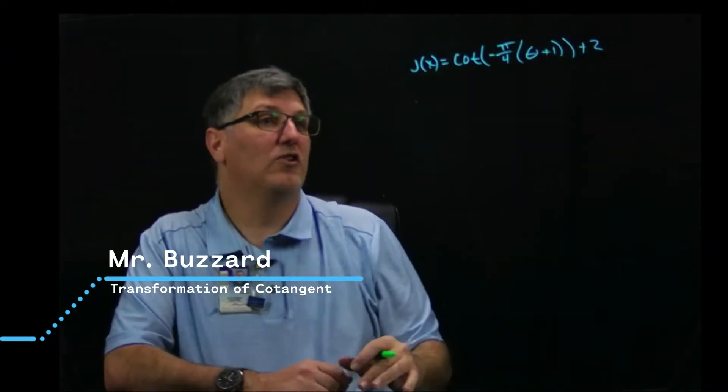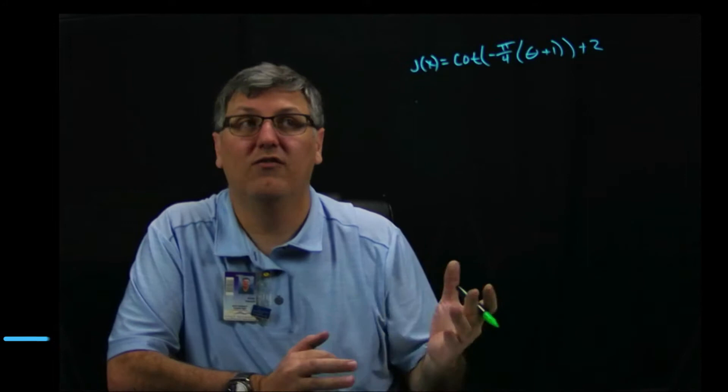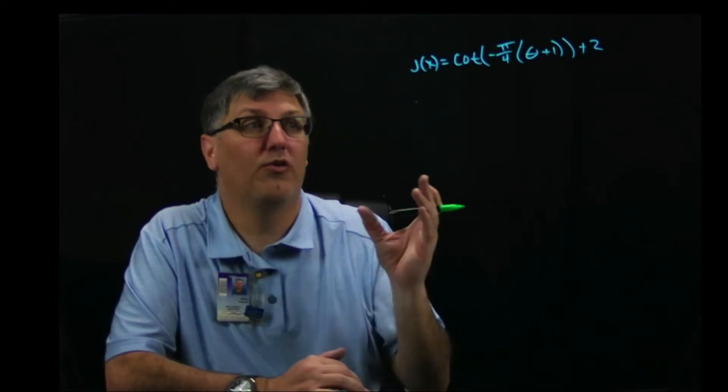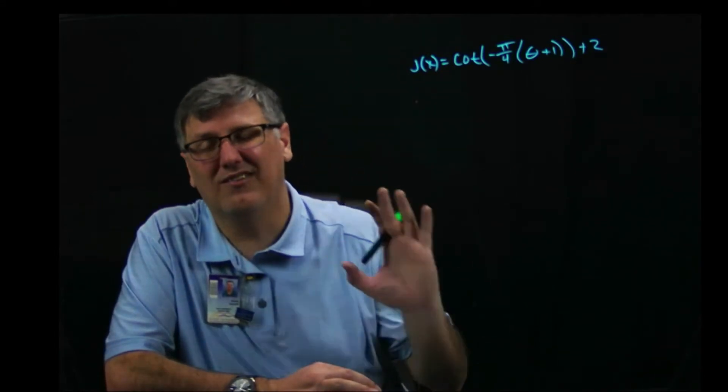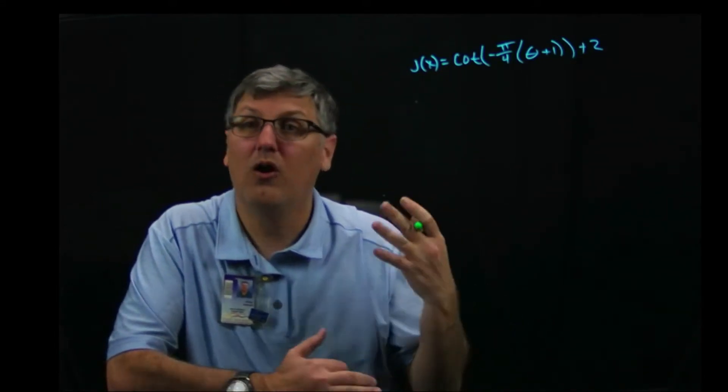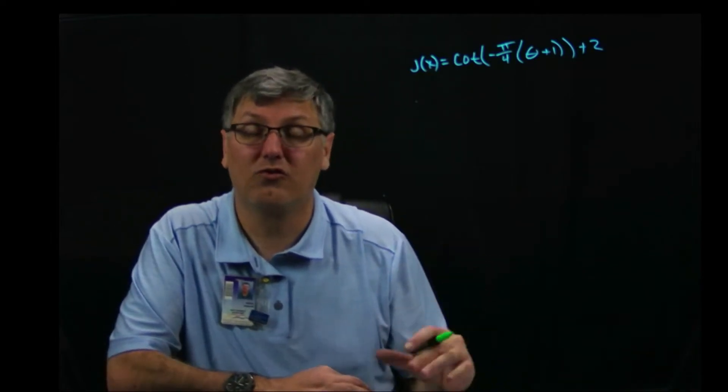All right, so here I have a function j(x) equals cotangent of negative pi over four times theta plus one, the whole thing we're adding by two, and we're going to do the transformations. Well, it's going to be exactly the same as we've done before. We're going to use our parent function points, we're going to set up our mapping, and then we're just going to basically play connect the dots. So here we go.